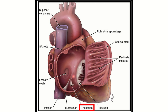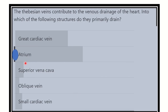It is clear from the diagram that this Thebesian vein is located in the right atrium. So the Thebesian vein drains into the right atrium — that is the answer. The venous drainage of the Thebesian vein occurs in the right atrium, and it drains the heart's own blood supply into the right atrium of the heart.